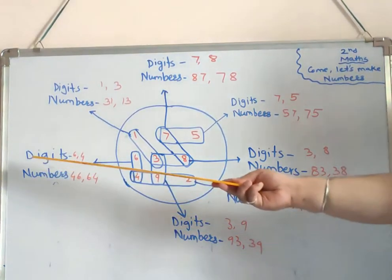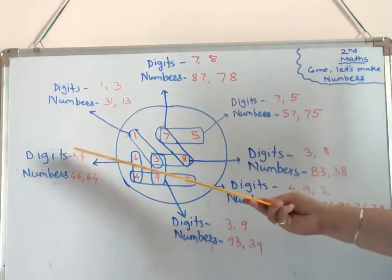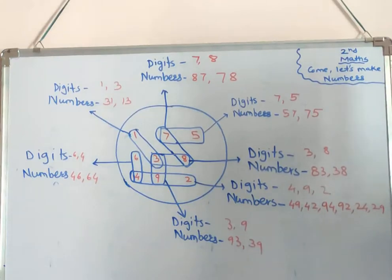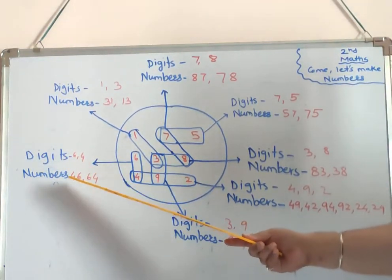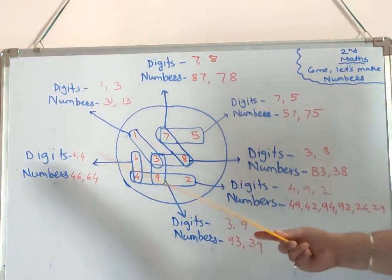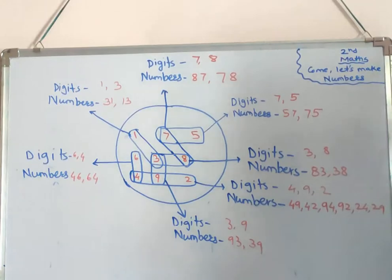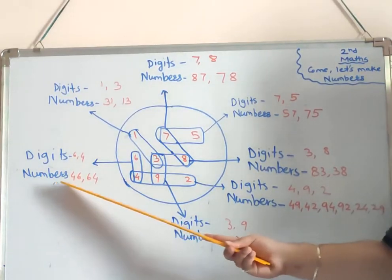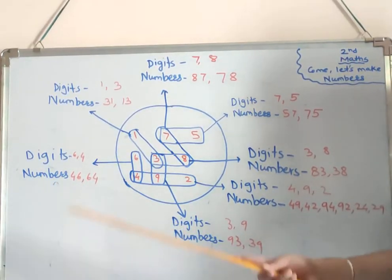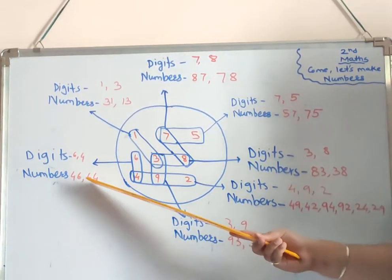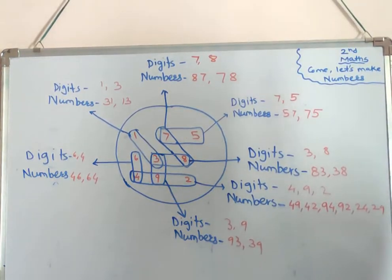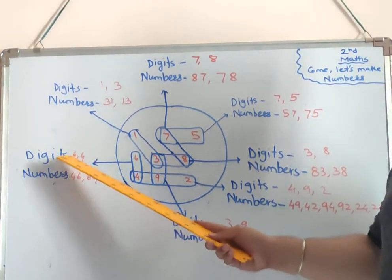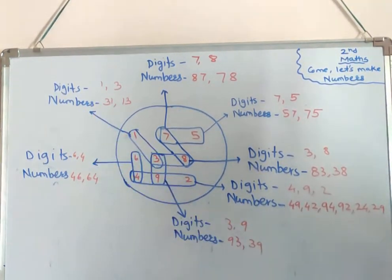Next, digits are six and four. Take six in the units place and then take four in the units place. So 46 and 64 are the two numbers formed from the digits 6 and 4.